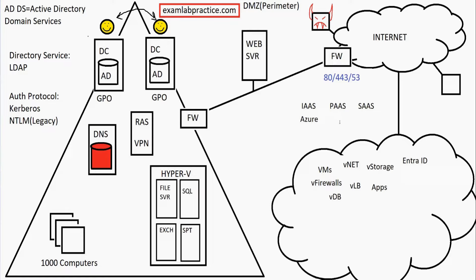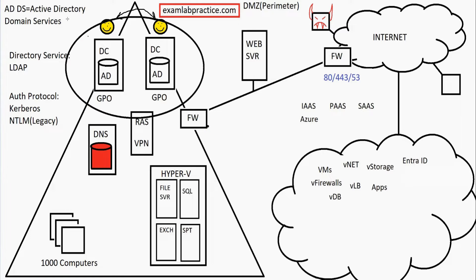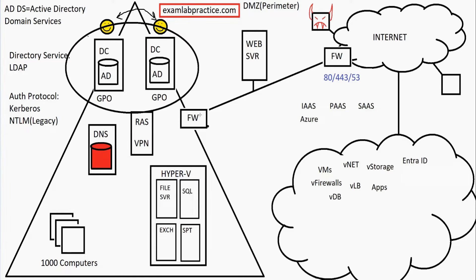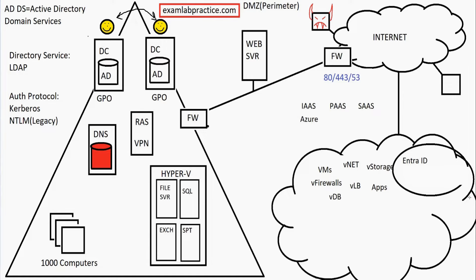Entra ID is a Platform as a Service and is Microsoft's directory services in the cloud. This is where user accounts, passwords, groups, permissions, and role permissions are all managed through Entra ID, formerly Azure AD. On-premise in a domain, we called it ADDS — Active Directory Domain Services. Microsoft changed the name partly to distinguish the difference between on-premise Active Directory and the cloud-based Entra ID.